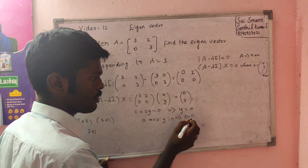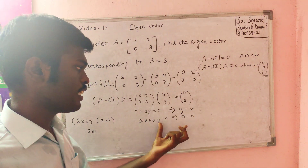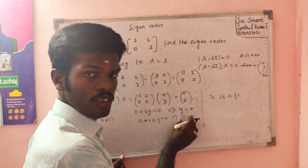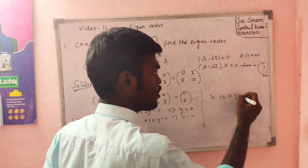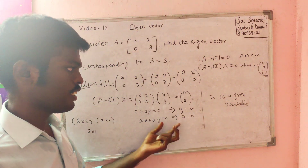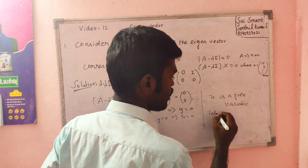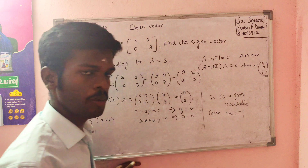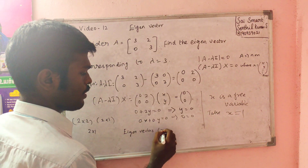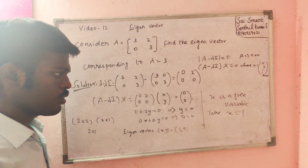So 0 equals 0 from the second equation, confirming it. Therefore y equals 0. Since x is a free variable, we can take x equal to 1. So if we write the eigenvectors, for lambda equal to 3, the eigenvector [x; y] equals [1; 0], with y equal to 0 as the free variable choice.